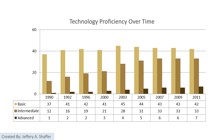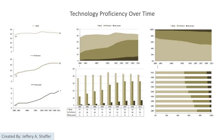A bar chart version is better, but the scales are very different for basic, intermediate, and advanced, making it hard to see the trend of each against the others. A dashboard then attempts to put the pieces together in a redesign to solve some of those issues.